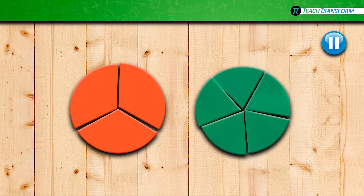Pause the video now and discuss why thirds are larger than fifths when the wholes are the same size, and then write what you're thinking in part two on your sheet. You can start the video again when everyone at your table is finished.